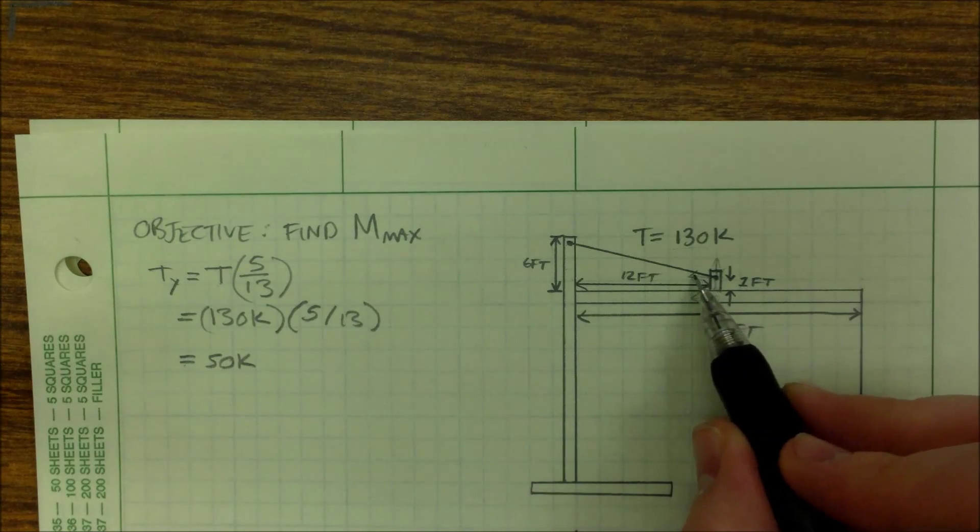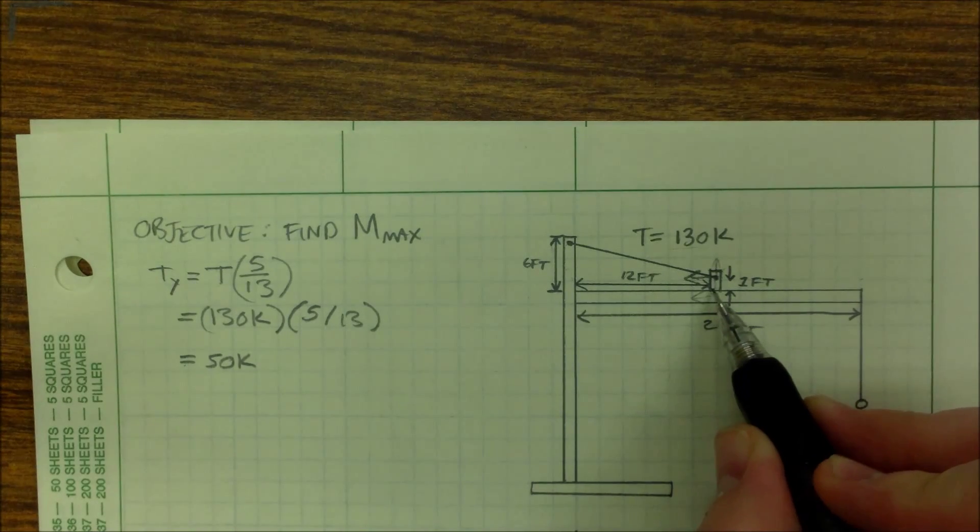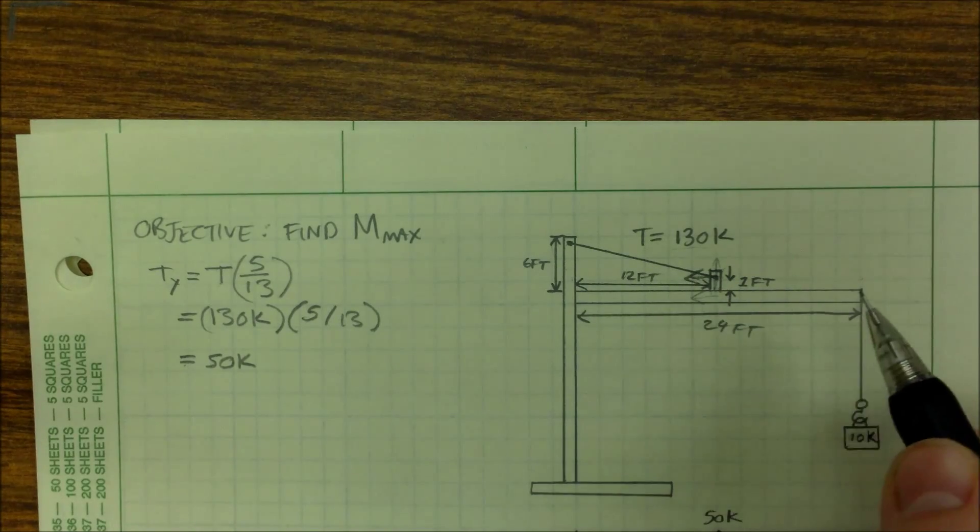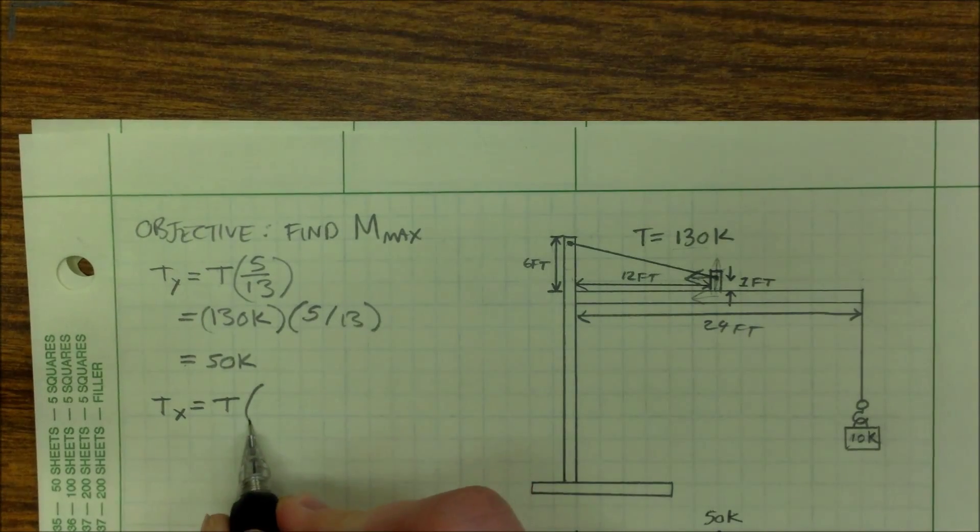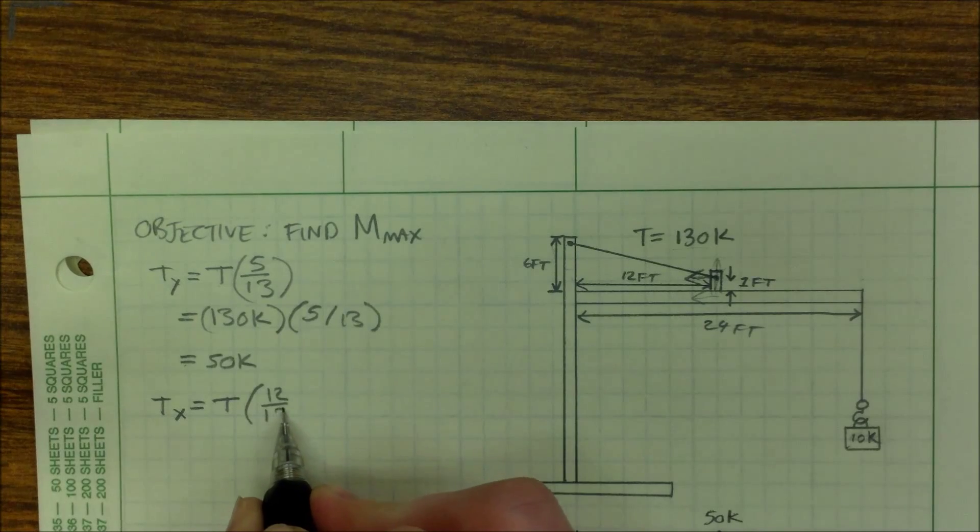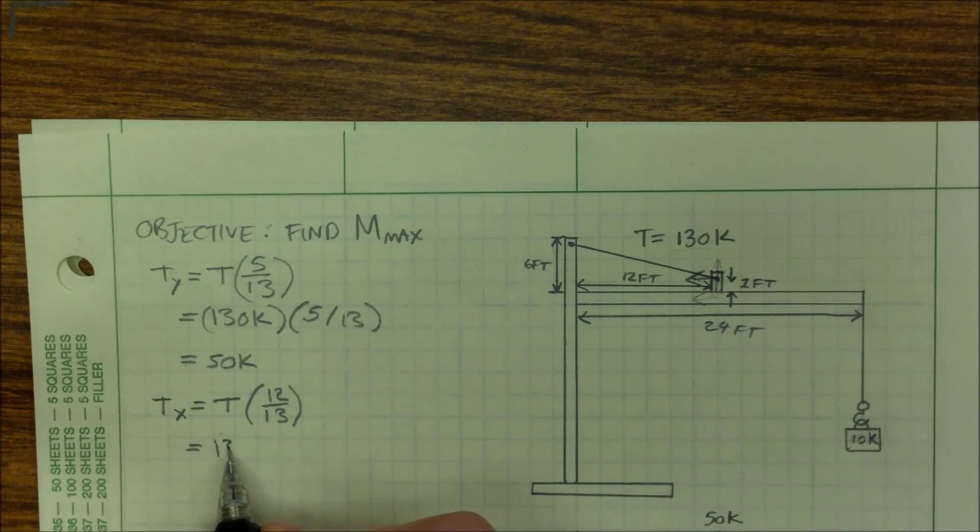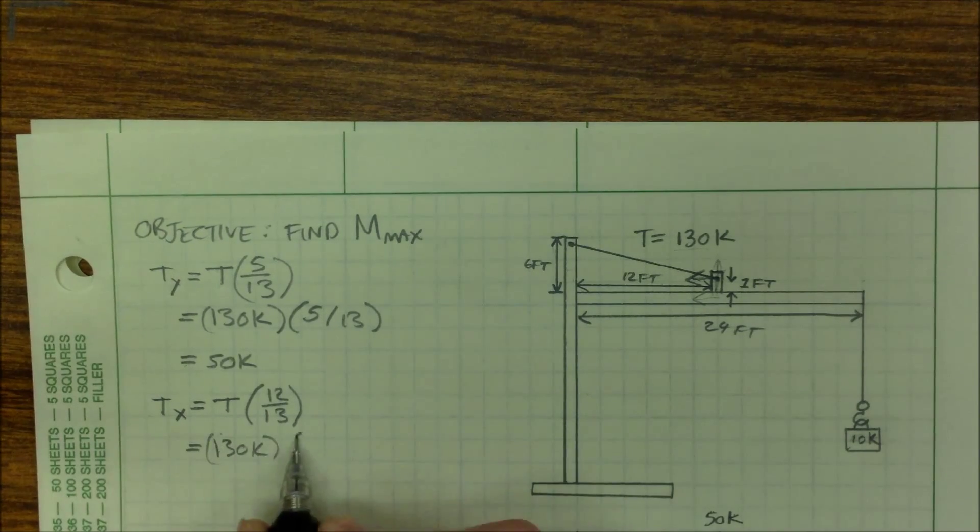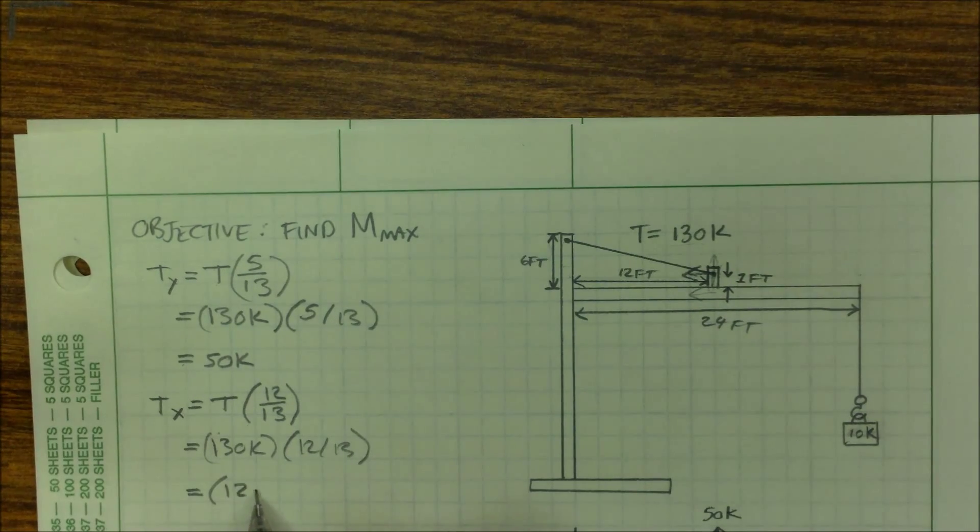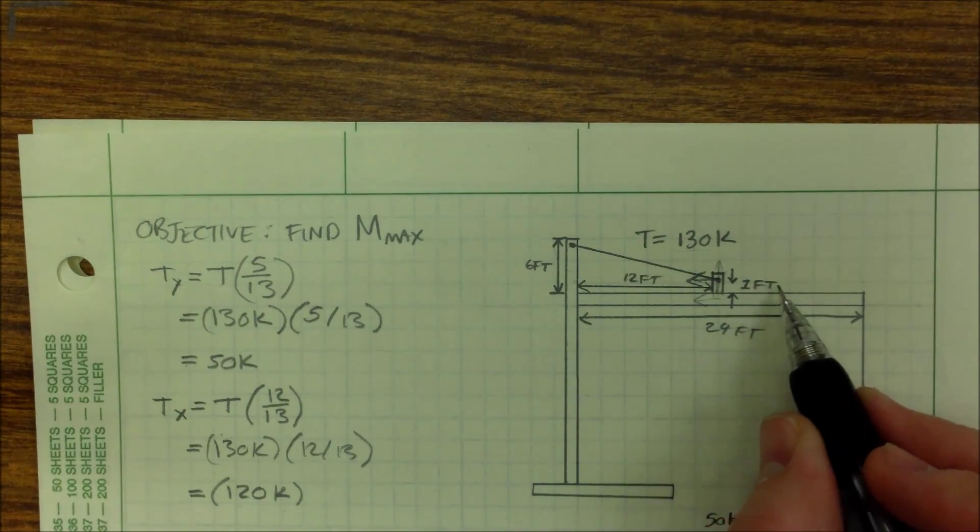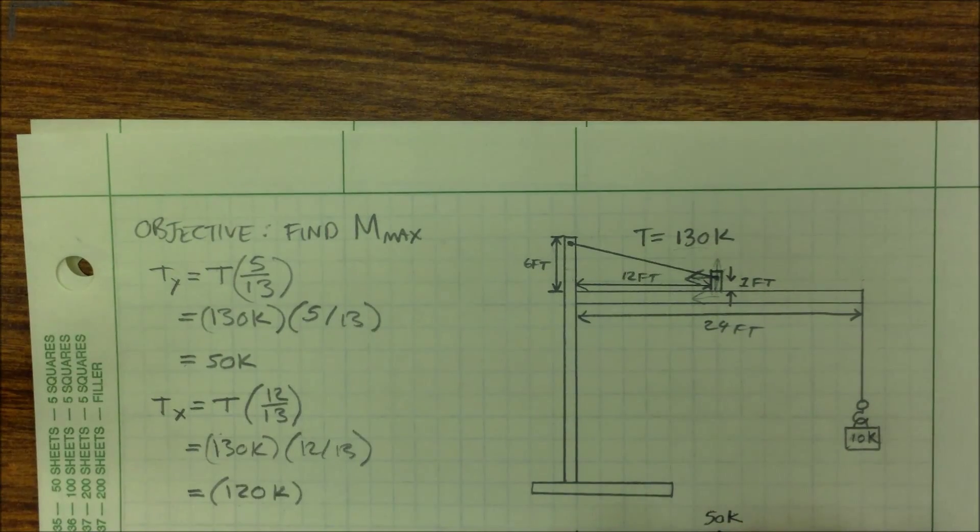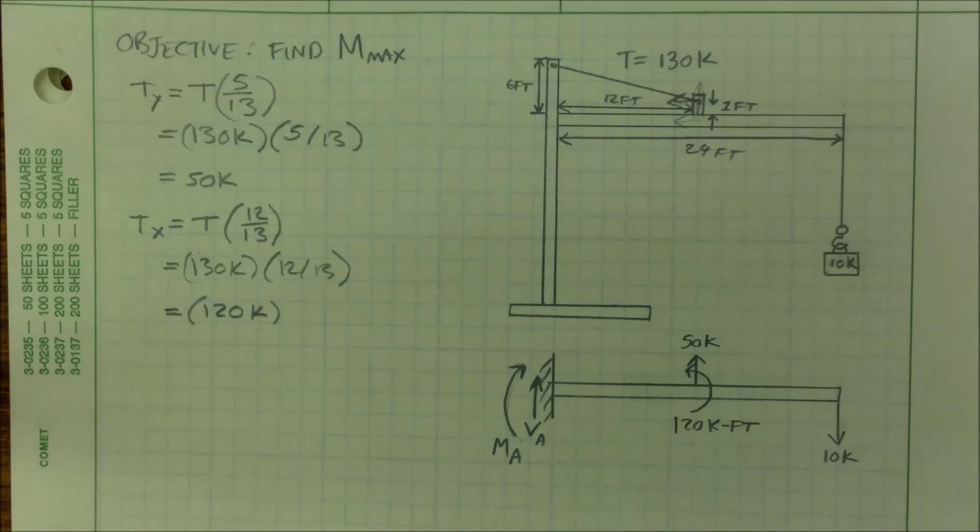Okay, now we need to know the horizontal so we can find out the moment. We already have the moment arm is one foot. We just need to know what is the force on that moment arm. So I need to find Tx. I have the total tension and I need it in the x direction. This is 130K. So 120K times a moment arm of one foot is going to make my applied moment 120 kip-feet.